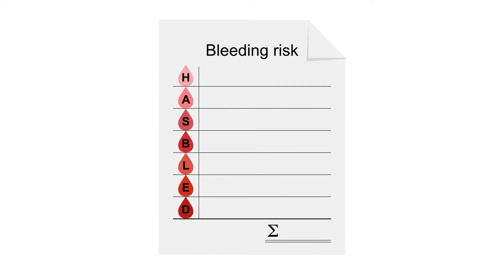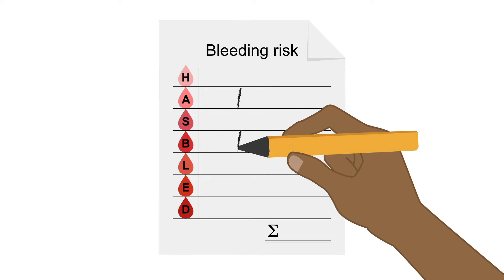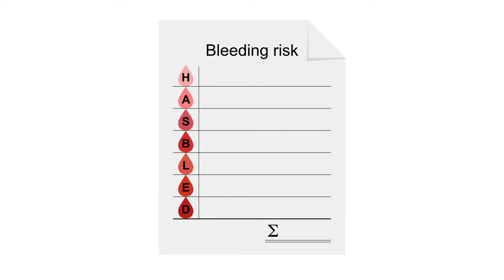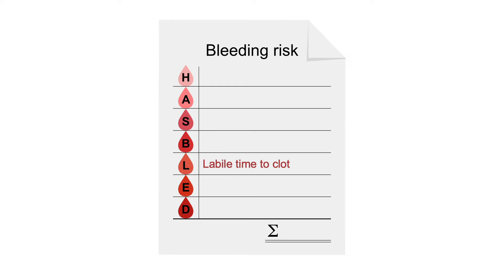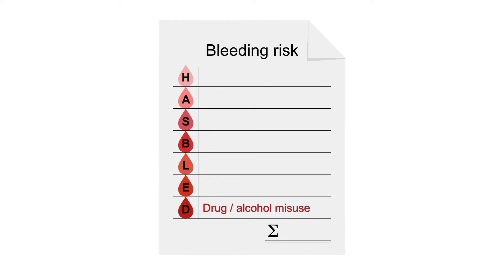Like CHADS-VASc, when using the HAZ-BLAD Scoring System, one point is given for each of the predictive factors a patient has. For HAZ-BLAD, these are: hypertension; abnormal hepatic and/or renal function; a history of stroke; a history of bleeding; labile or changing time to clot; being elderly, over the age of 65; and drug and/or alcohol misuse, including aspirin and non-steroidal anti-inflammatory drugs.